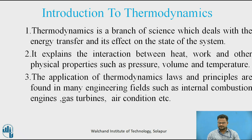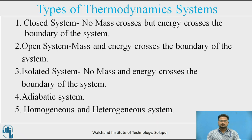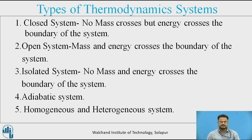Coming to the types of thermodynamic systems: a system is a prescribed region of space or finite quantity of matter, surrounded by an envelope called the boundary, which may be an imaginary surface enclosing some matter. The boundary may be fixed or movable when a system containing a gas is compressed or expanded. The types of systems of engineering interest are: closed system, where no mass crosses but energy crosses the boundary; open system, where mass and energy both cross the boundary; isolated system, where no mass and no energy crosses the boundary; adiabatic system; and homogeneous and heterogeneous systems.